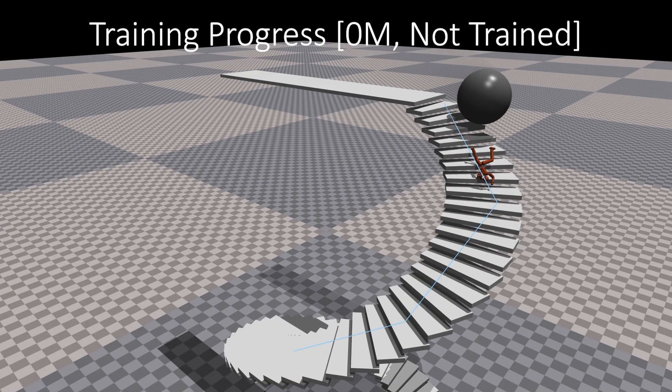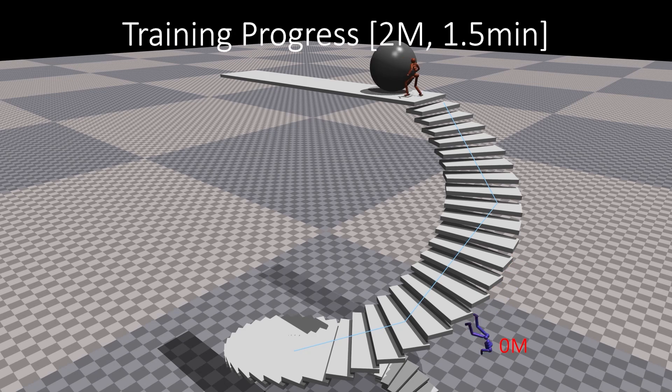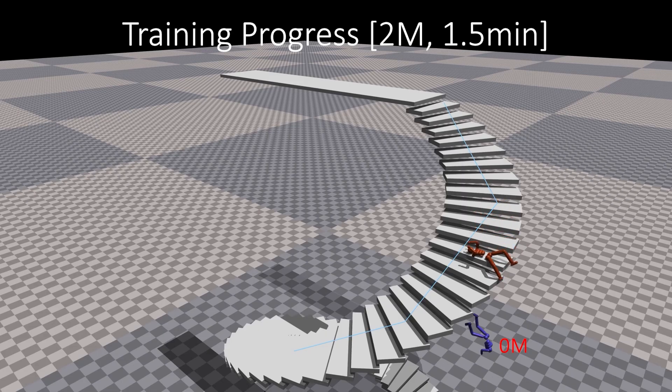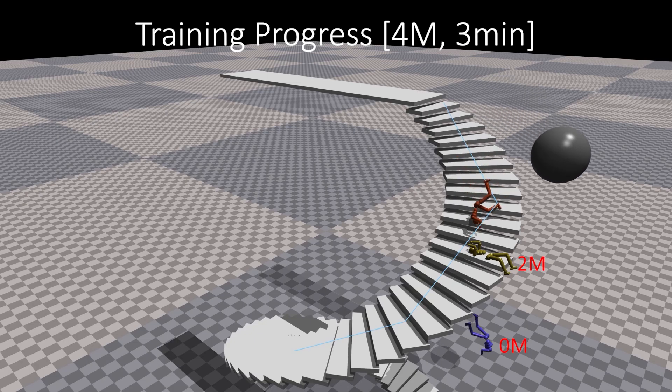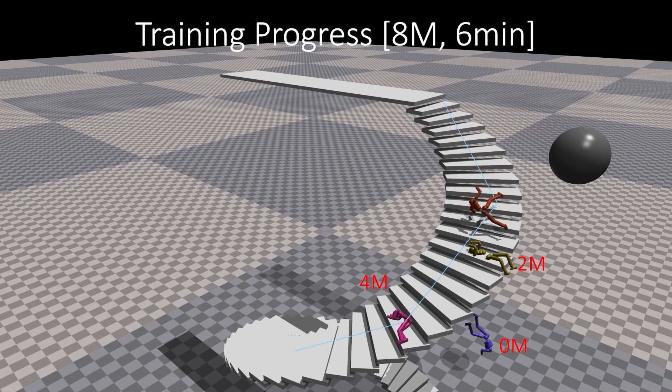When the controller is not trained, the actor is unable to roll down the stairs and ends up falling. In the early stages of training, the controller prevents the actor from falling down the stairs. As training progresses, the actor increasingly follows the given trajectory. After six minutes of training, the actor successfully completes the trajectory, executing the desired action scene.